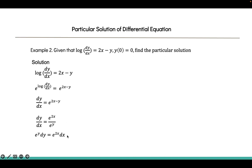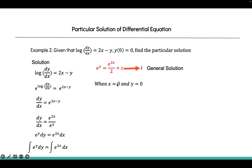After separating the variables, integrate both sides. Integration of e^y with respect to y is e^y. Integration of e^(2x) with respect to x is e^(2x)/2 + C — this is Equation 1. Now put x = 0 and y = 0 into Equation 1: e^0 = e^0/2 + C. Since anything raised to 0 is 1, we get 1 = 1/2 + C, so C = 1/2.